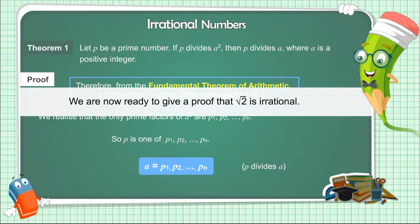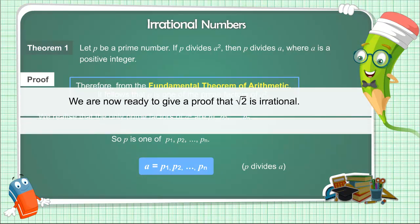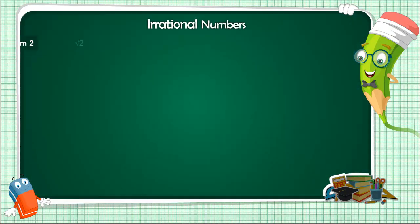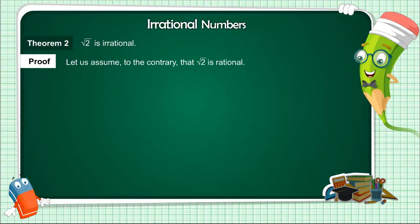We are now ready to give a proof that √2 is irrational. The proof is based on a technique called proof by contradiction. Let us assume, to the contrary, that √2 is rational.